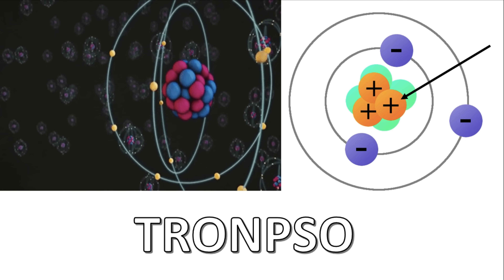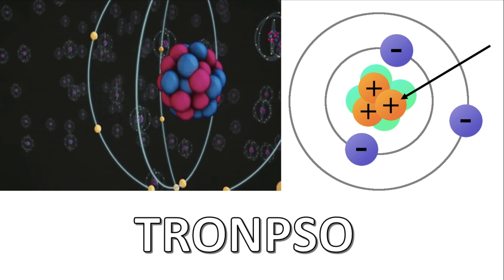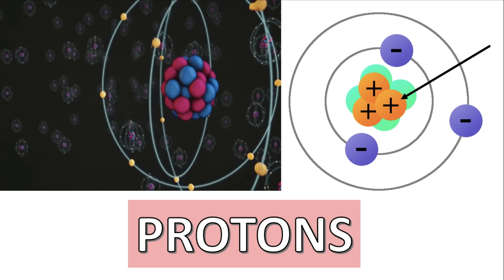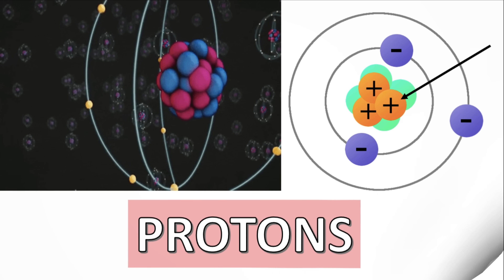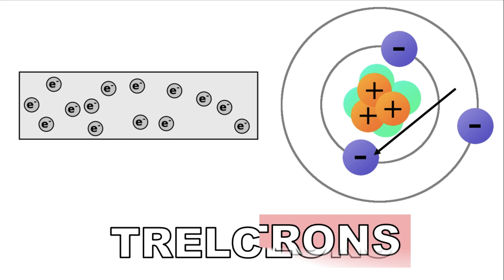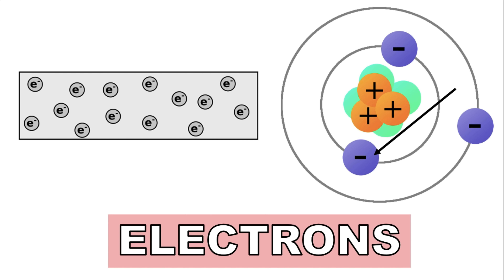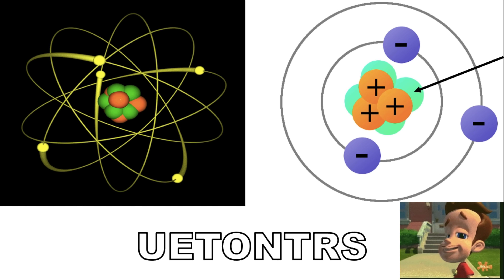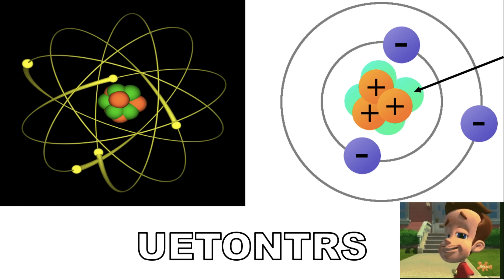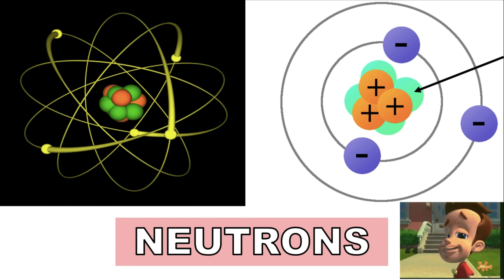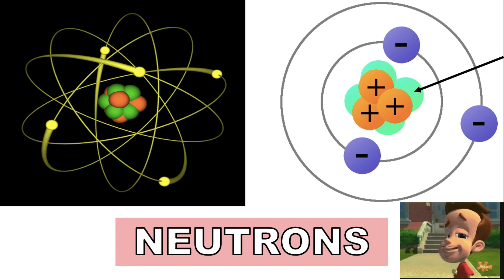Next. What is this word? This is protons — these are the positively charged particles. How about the fourth one? This word is electrons. These are the negatively charged particles. Let us have the last one. This is neutrons — these are the uncharged particles, neither positive nor negative.